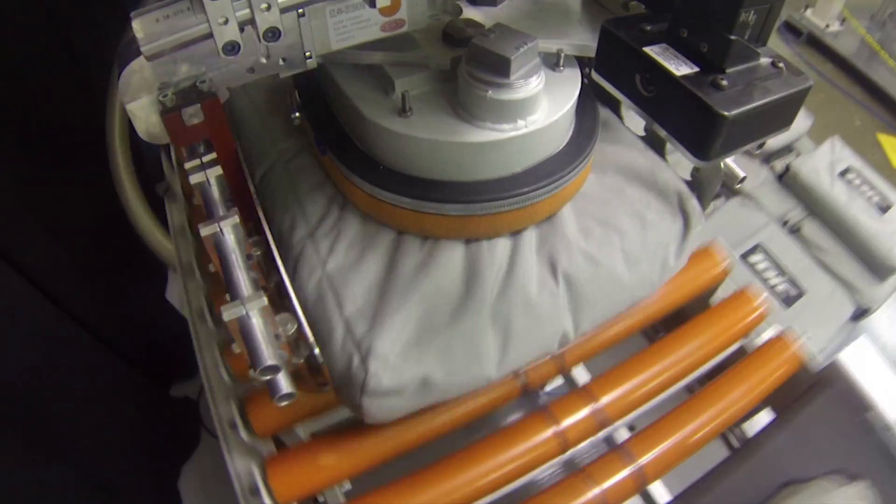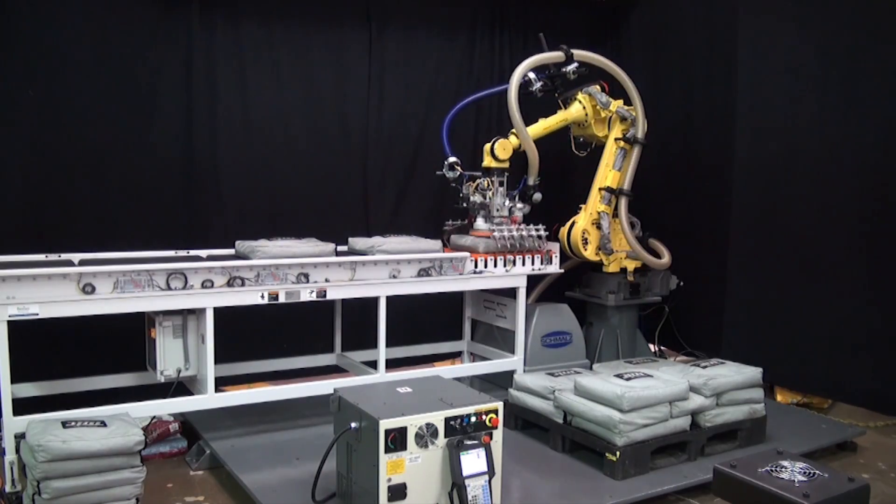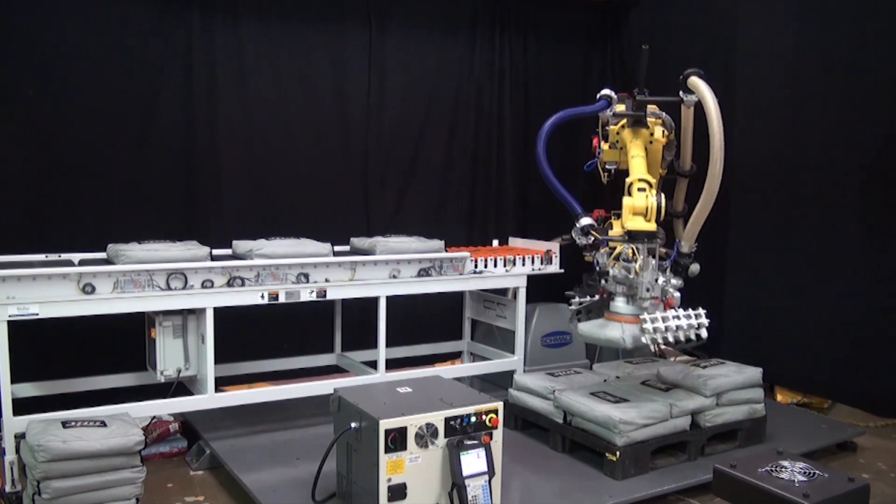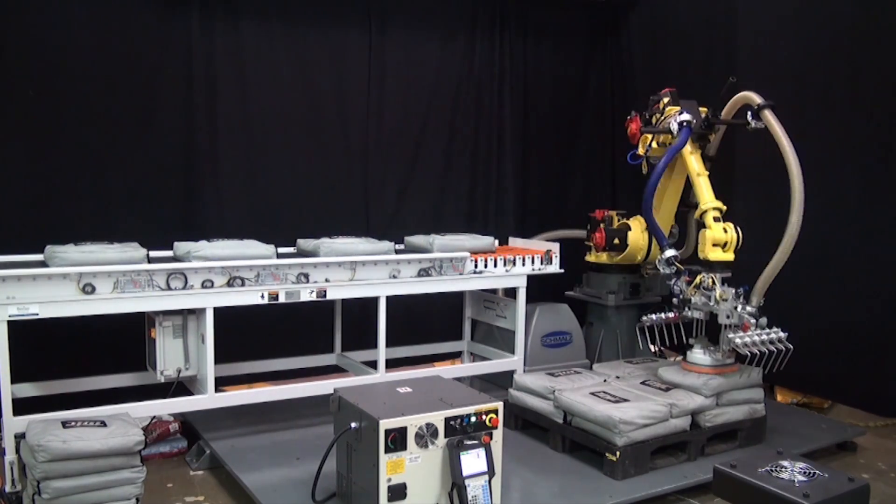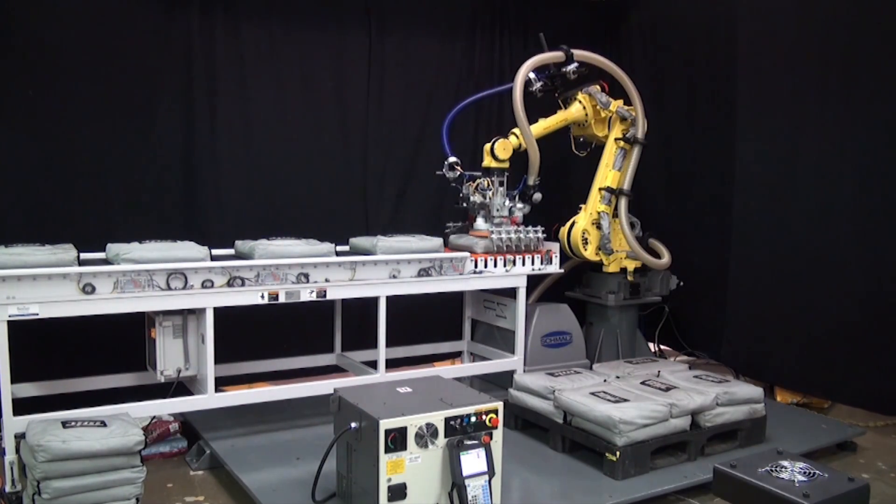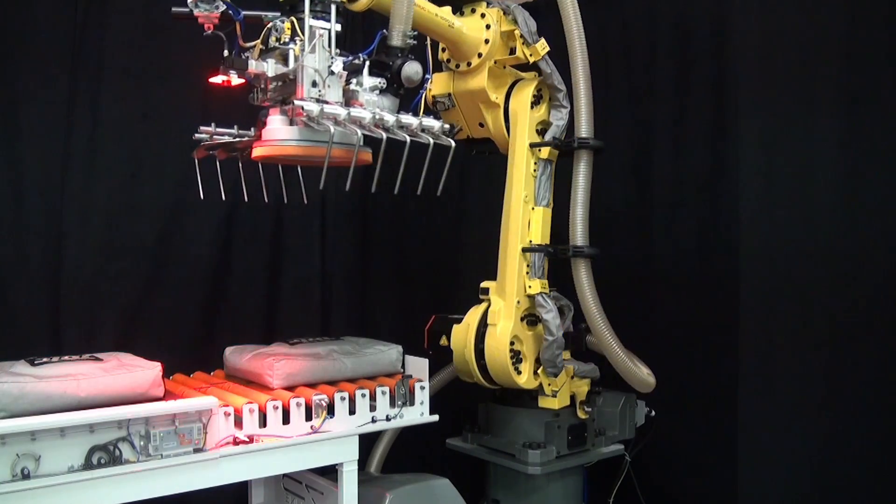Using the FANUC R1000IA 80H robot can add energy efficiency to an operation, as this robot is more energy efficient than robots with larger payloads.